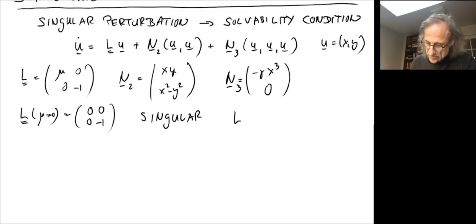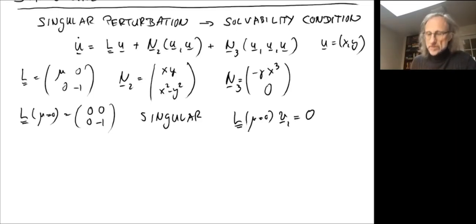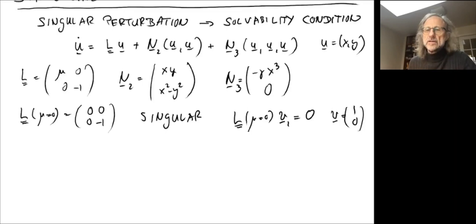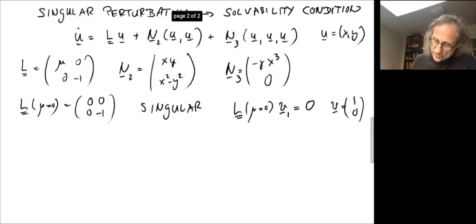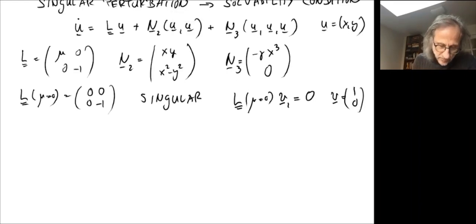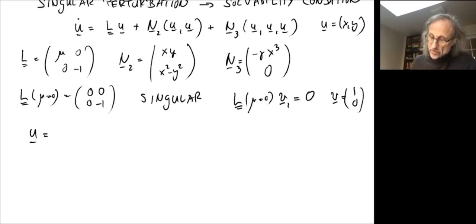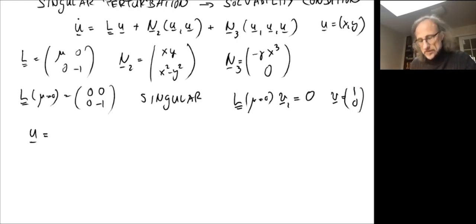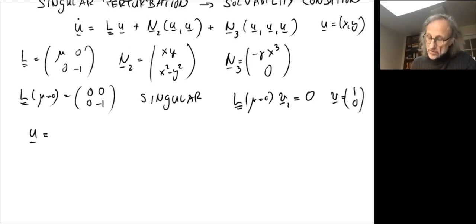We have the equation L(mu=0) V1 equals zero, where V1 is an eigenvector for eigenvalue zero. In our case, V1 is the column vector (1, 0). That's a key feature of all these kinds of calculations. It turns out to be useful to use V1 in the leading order expansion, because V1 spans the center eigenspace and is tangential to the center manifold, and we know the dynamics act on the center manifold.